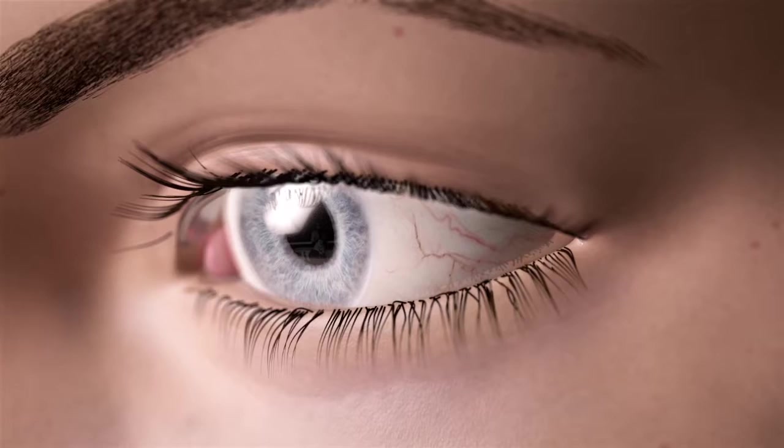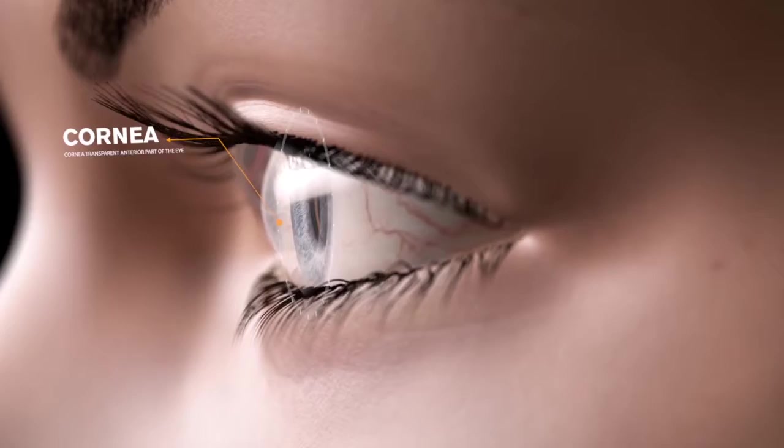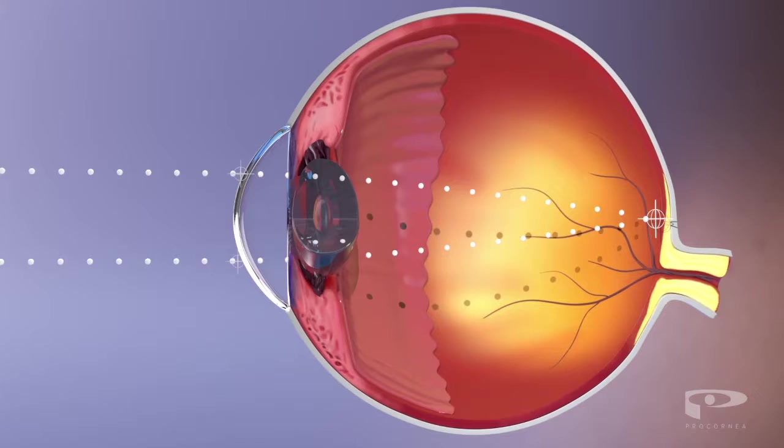When we look at something, light enters the eye through the cornea. The cornea has a curved lens-like shape, which helps to focus light directly on the retina at the back of the eye.